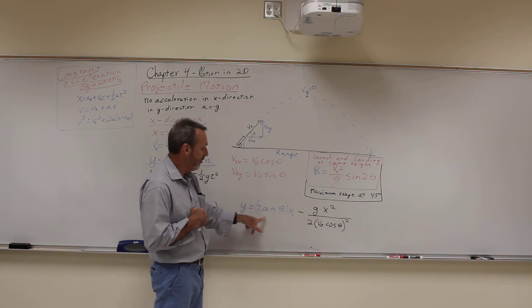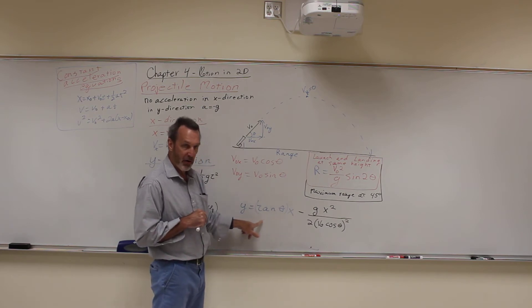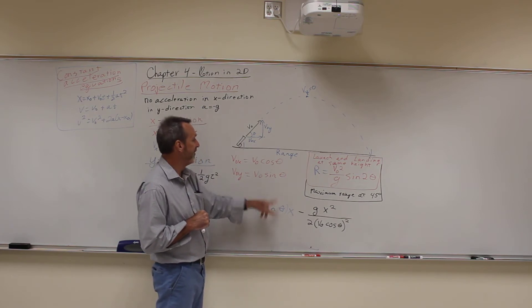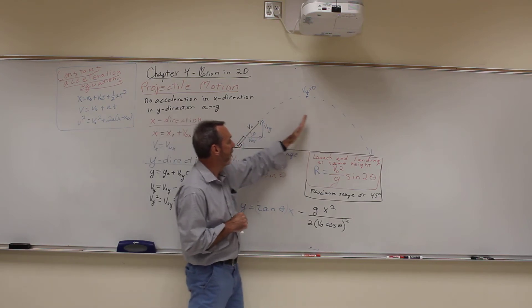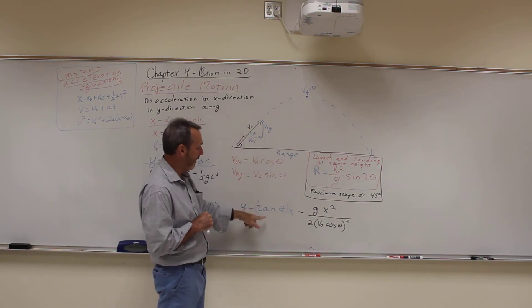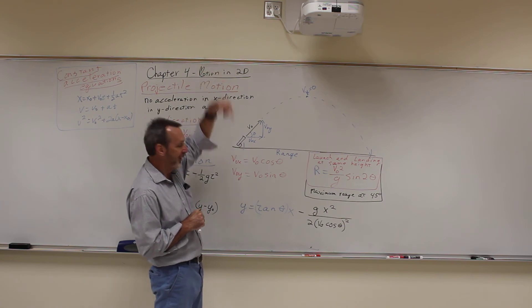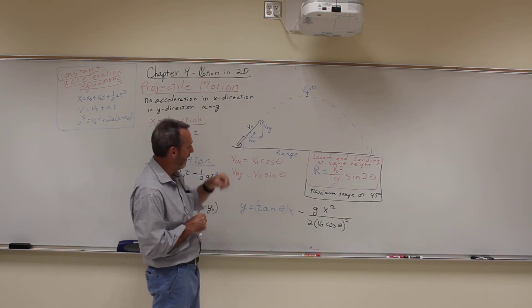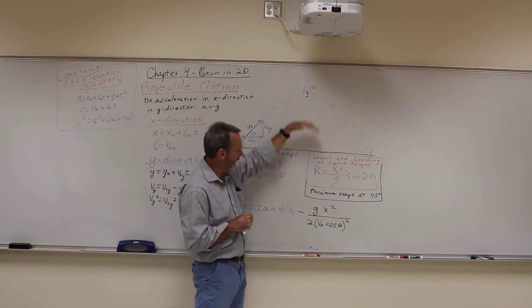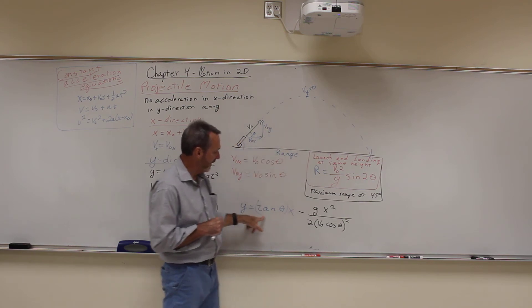And this shifts the parabola by how big this number is, shifting it over this way or that way depending on the value. Meaning if you shoot it more straight up, your parabola is going to be a little skinny parabola. If it's shot at a lower angle, you're going to have a flat one.